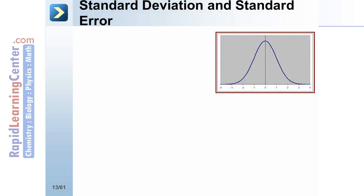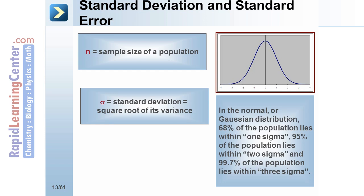The sample size of a population is defined as n. The standard deviation of a population is defined as sigma and is the square root of its variance. It shows how much variation there is from the mean. In the normal or Gaussian distribution, 68% of the population lies within 1 sigma, 95% of the population lies within 2 sigma, and 99.7% of the population lies within 3 sigma.